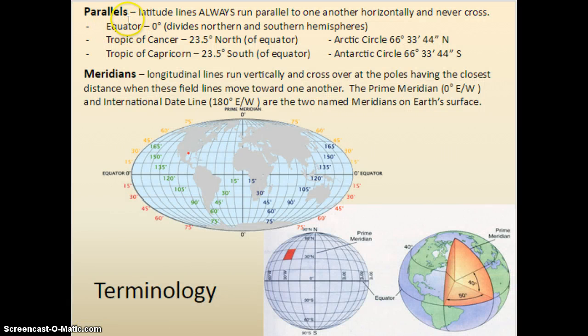There are five primary parallels. The one that most people are familiar with is the equator, zero degrees north-south, which divides northern and southern hemispheres. We also have the two tropics: Tropic of Cancer in the northern hemisphere and the Tropic of Capricorn, 23.5 degrees in the southern hemisphere. Notice both of them are 23.5 degrees north and south, respective to the equator.